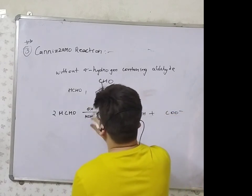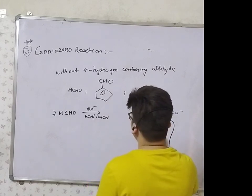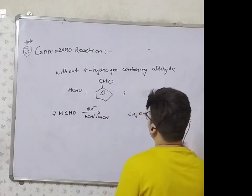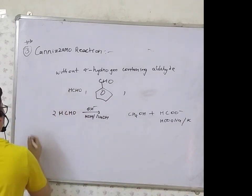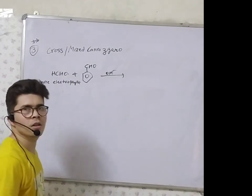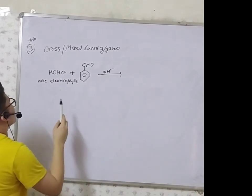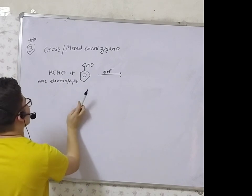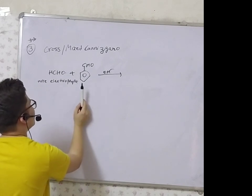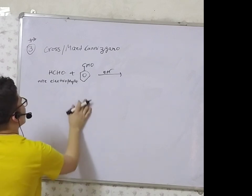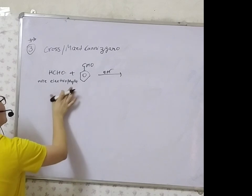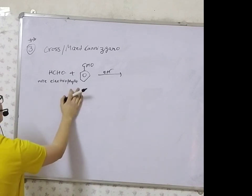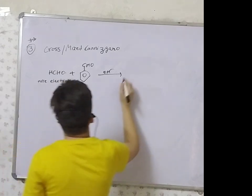If only OH⁻ is given, the product is COO⁻. If KOH or NaOH is given, the products are COO⁻ and Na⁺ or K⁺ salt. In cross-Cannizzaro reaction, two different aldehydes without alpha-hydrogen react. The more electrophilic aldehyde oxidizes to the acid and the less electrophilic reduces to the alcohol.